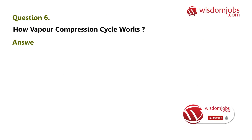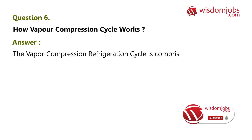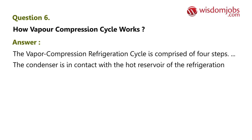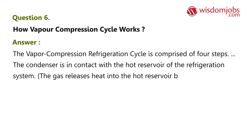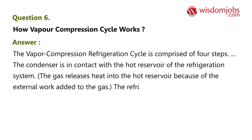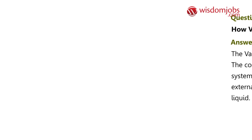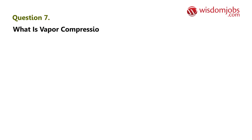Question 6: How does the vapor compression cycle work? Answer: The vapor compression refrigeration cycle is comprised of four steps. The condenser is in contact with the hot reservoir of the refrigeration system. The gas releases heat into the hot reservoir because of the external work added to the gas. The refrigerant leaves as a high pressure liquid.